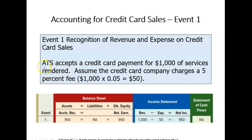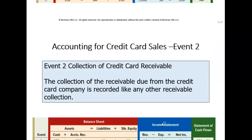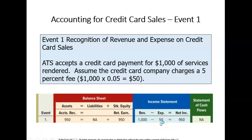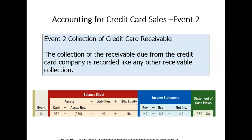Let's say that the tutoring service accepts a credit card for payment. The amount was $1,000, and the credit card company is charging them a 5% fee, which means $50 is the actual fee being charged for the use of that credit card. To record this transaction, the company ATS has accounts receivable of $950 — that's the amount they'll receive from the credit card company less the $50 fee. That fee of $50 is shown as an expense on the income statement. When the money comes in from the credit card company, it increases their cash account and decreases accounts receivable.